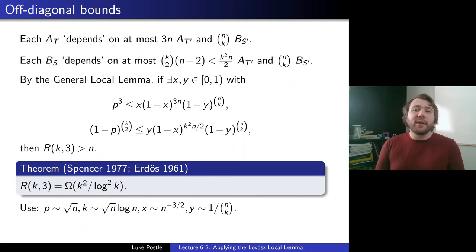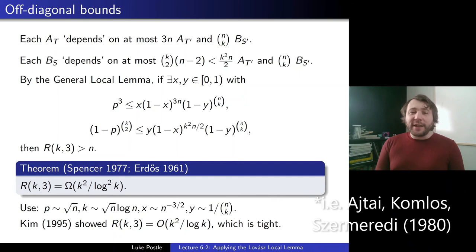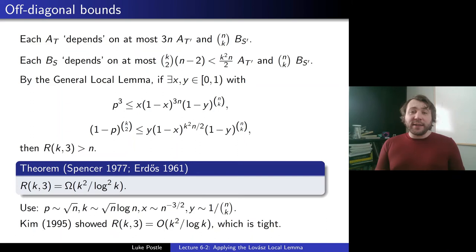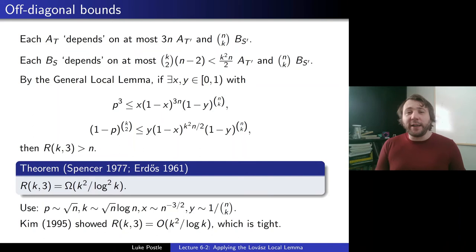Kim in 1995, in a very celebrated paper, showed that R(k,3) can be improved to Θ(k²/log k), which by earlier results is tight. So R(k,3) is on the order of k²/log k. But generally this Local Lemma approach can be used — and was by Spencer — to improve these smaller off-diagonal numbers. For R(k,4), R(k,5) etc., you get rather good balance. You'd have two sets of inequalities and optimize x, y and n to make this work.